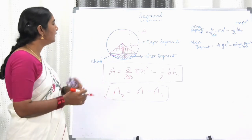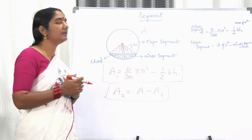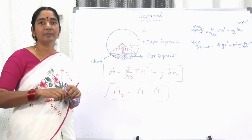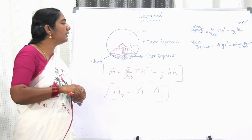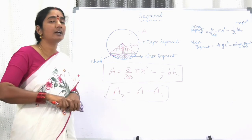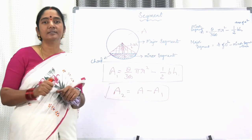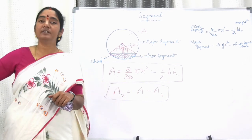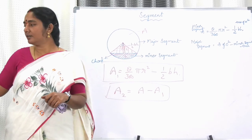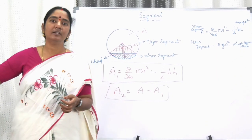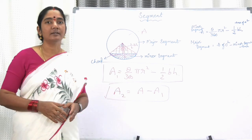I think now you got the point — what is the meaning of a segment, what is the minor segment, what is the major segment, and if the chord is a diameter, it divides the circle into two equal semi-circles whose areas are each half the area of the circle. Now you understand what is the meaning of a minor and a major segment. Thank you.